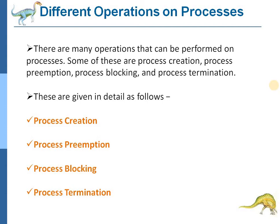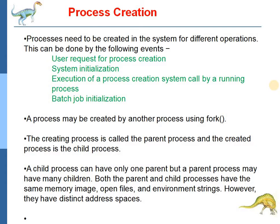There are many operations that can be performed on processes. Some of these are process creation, process preemption, process blocking or waiting, and process termination. First, process creation. Processes are created by the operating system to simplify the job of execution of the program by the CPU, and the processes are created by user request, system initialization, execution of process creation system call by running processes, and batch job initialization.